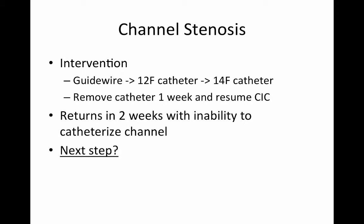For our patient, we started with channel dilation, first inserting a guide wire and then dilating him up easily with a 12 French and then 14 French catheter. We removed the catheter one week later, and he resumed intermittent catheterization. Unfortunately, he returns two weeks later with inability to catheterize the channel. So what should be our next step once dilation has failed?